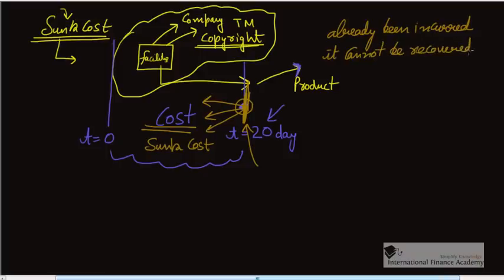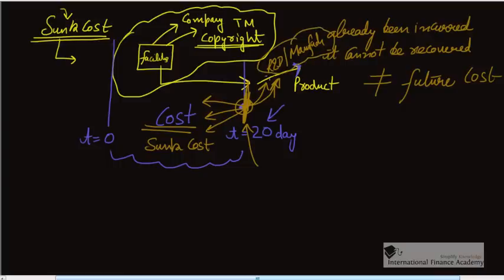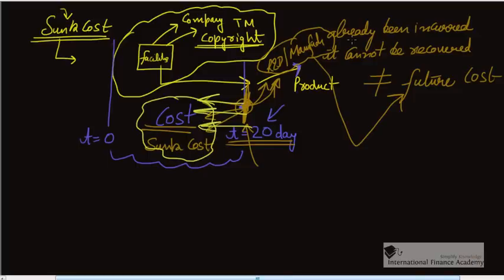It has happened in the past and is different than the future cost you will incur. For example, to manufacture this product you need to put some R&D, manufacturing, salaries, people. At this point you will spend some cost, and I'm differentiating this cost which will happen after t equals 20 days as future cost, versus something which has already happened in the system before this point, which I'm calling sunk cost that has already been incurred and cannot be recovered.